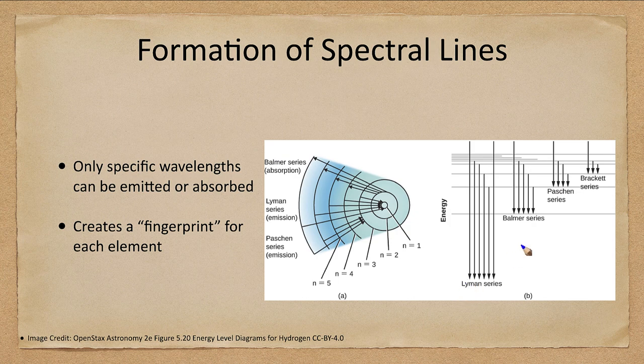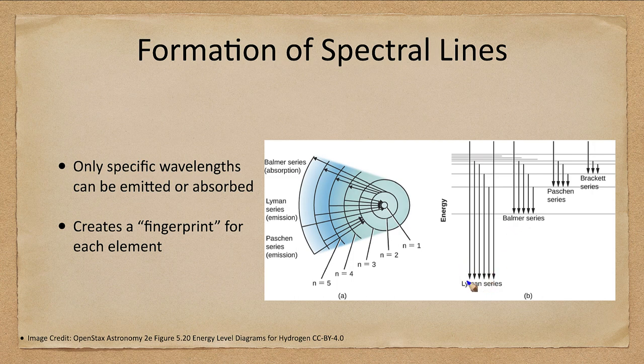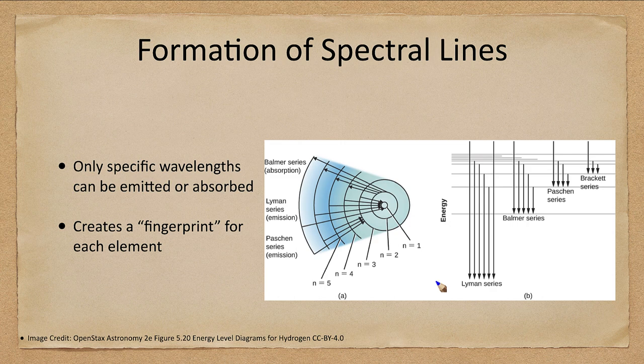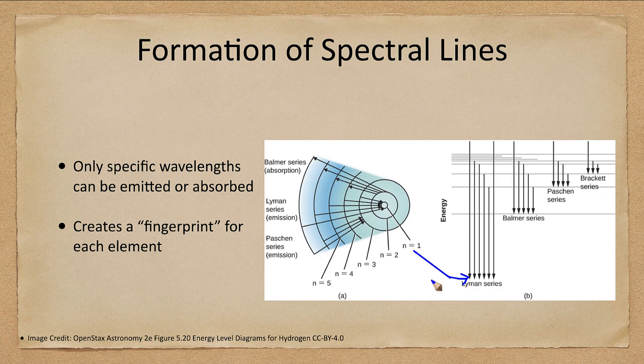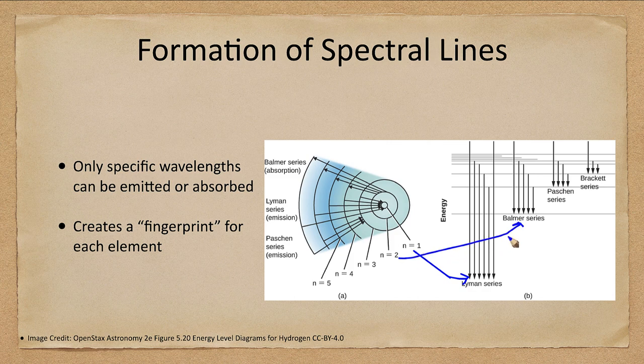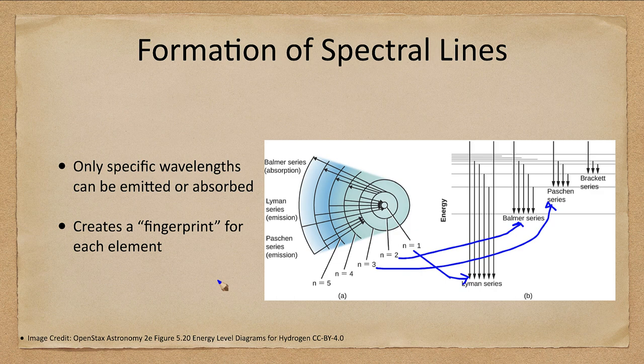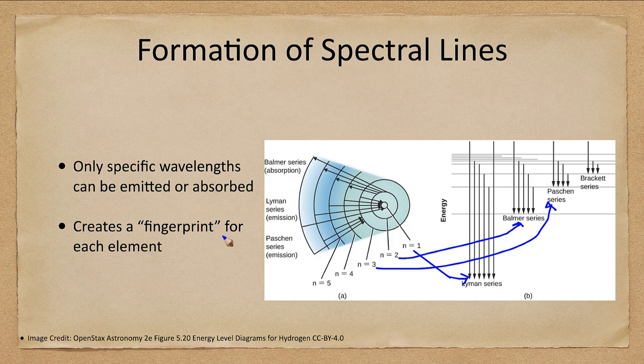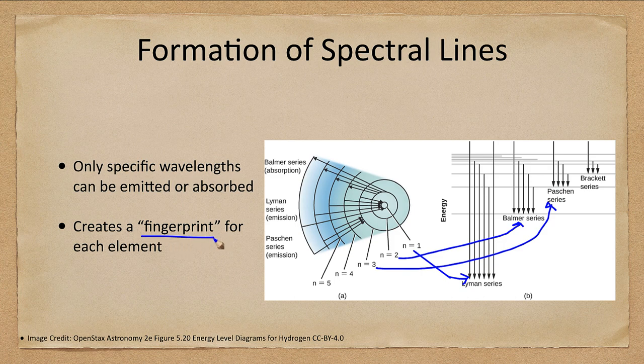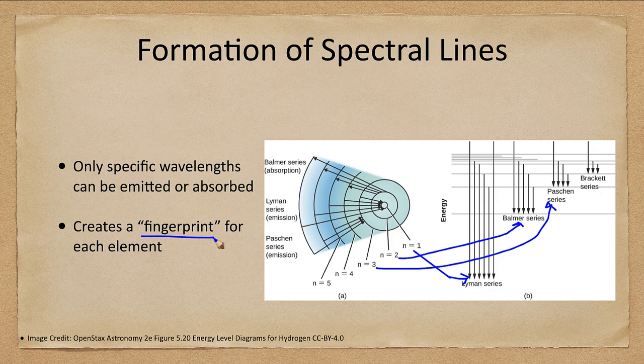So here we have the different series that we can get, depending on what energy level you're transferring to. So if you're transferring to the ground state, n equals one, you get the Lyman series. Those are very high energy and in the ultraviolet. n equals two, if you're ending up at that state, you get the Balmer series, which is in the visible. n equals three, you will get the Paschen series, which is in the infrared and so on. So what this does is specific wavelengths, only specific wavelengths can be emitted or absorbed. Remember, we saw very specific lines in those emission and absorption spectra. And this gives us a fingerprint for each element. Each element has very distinct energy levels and that allows us to tell the difference between these.